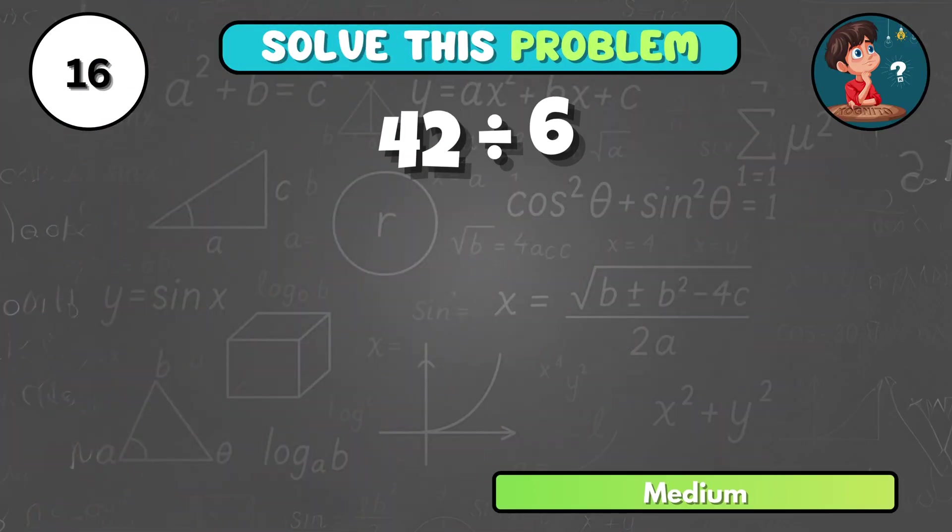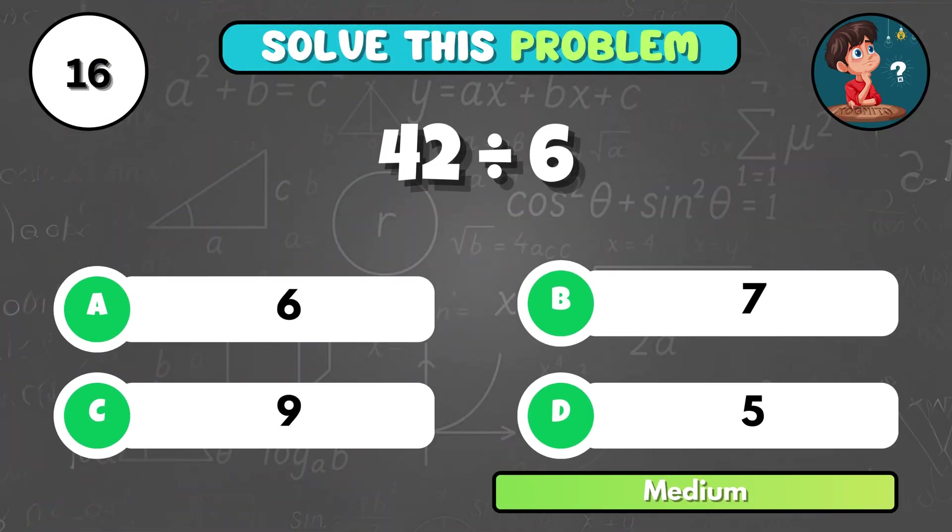How many times does 6 go into 42? It's B, 7.